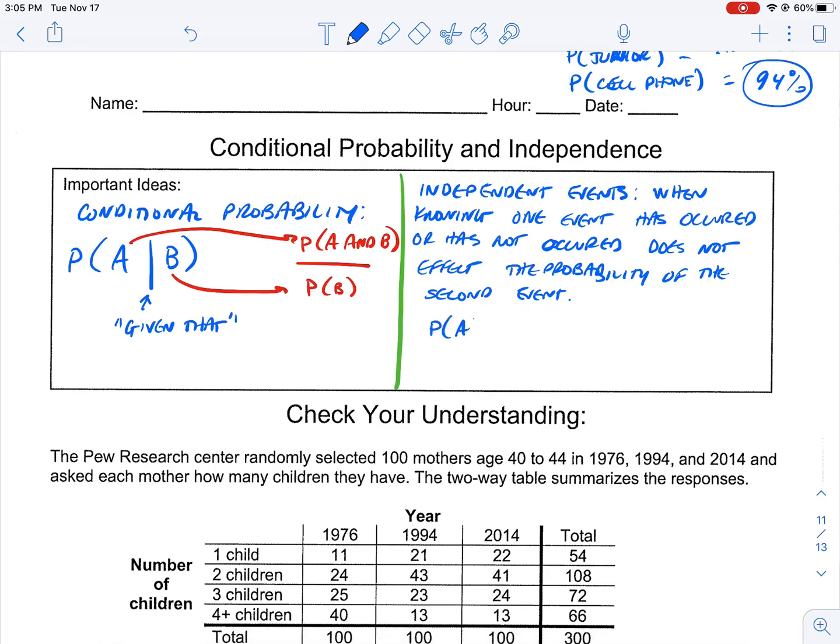How does that manifest itself in the mathematics? It would mean that the probability of A is equal to the probability of A given that B is equal to the probability of A given that B complement. So whether you are a junior, the probability of being a cell phone owner and the probability that you own a cell phone given that you're a junior, those things are equal. If this is true, then A and B are independent.